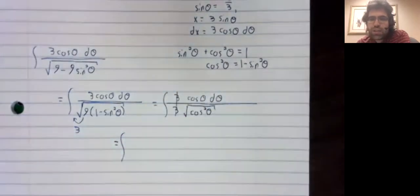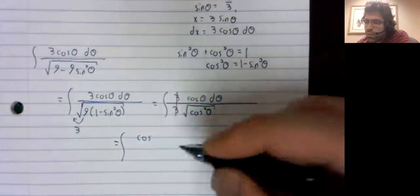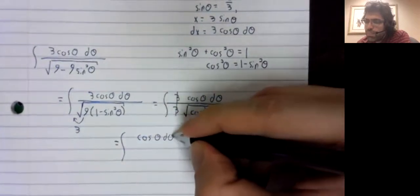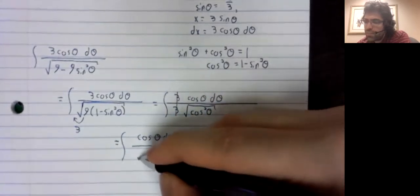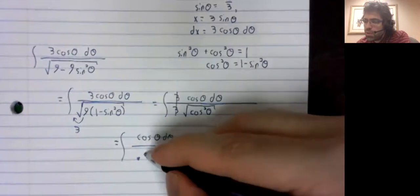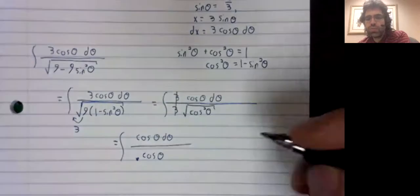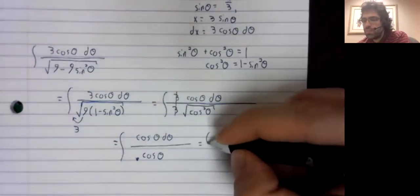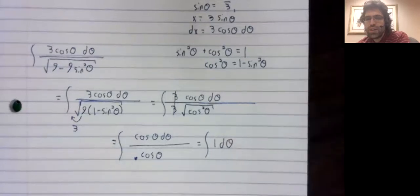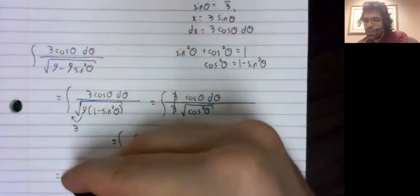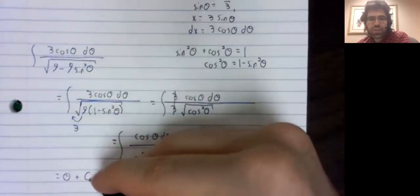Now, properly speaking, the square root of the cosine squared is the absolute value of the cosine. We'll briefly discuss that in a later video. For now, we simply won't worry about it. We will write this as the cosine of theta and get the integral of one d theta, which is theta plus c.